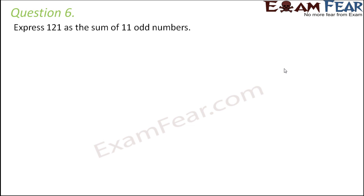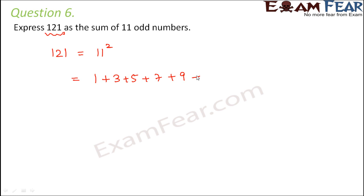Question number six: express 121 as the sum of 11 odd numbers. Since 121 is 11 squared, and n squared equals the sum of the first n odd numbers, we list the first 11 odd numbers: 1, 3, 5, 7, 9, 11, 13, 15, 17, 19, 21. So 121 is expressed as their sum.